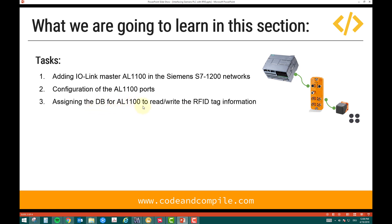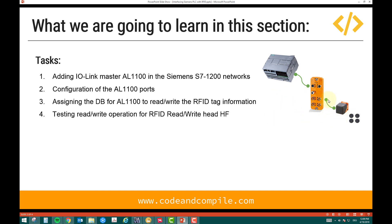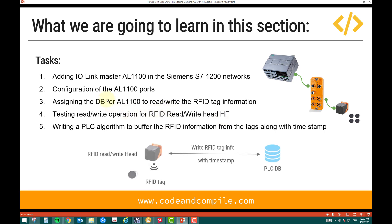The third task is assigning the DB for the AL1100 to read and write RFID tag information — I will show where I'm reading and writing the tag information from. The fourth task is testing the read/write operation of the RFID read/write head HF, which is high frequency. We will test how to read values in front of this RFID head and how to write values. Initially we will be working on the hardware devices — the IO-Link master, the RFID read/write head, and the tags.